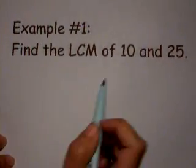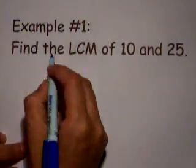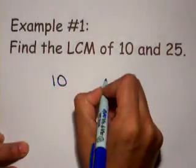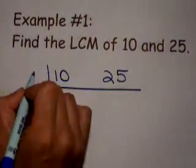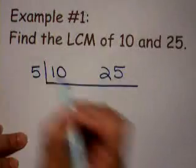So, first example, you have to find the LCM of 10 and 25. You're going to take 10 and 25, and you're going to have to find a number that could divide into both. And you could think of 5, because 5 is the only one that goes.